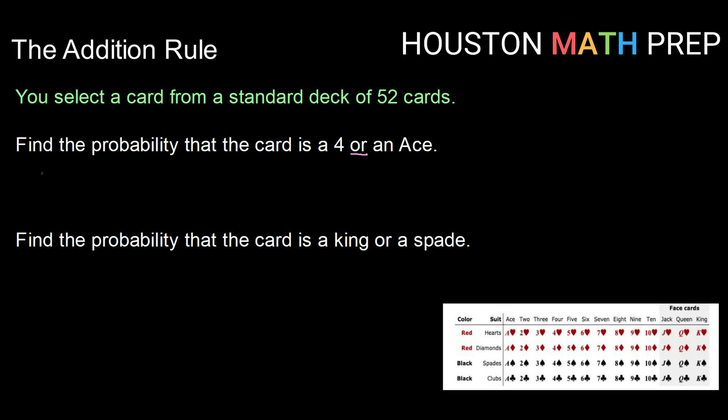We can think about the probability of 4 or an Ace as P(4) + P(Ace) - P(4 and Ace). Now hopefully that last thing struck you as a little odd. We know that when we draw a card it cannot be both a 4 and an Ace.